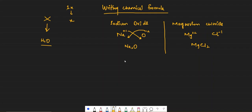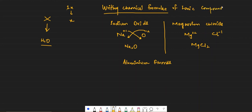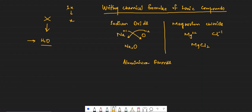Let's do aluminium fluoride. Just remember that here we are writing chemical formulas of ionic compounds — they follow a certain set of rules. Chemical formulas of covalent compounds do not follow any certain rules, so you just remember them over time. For example, water is a covalent compound and you already know its formula is H2O. Currently we are just talking about the chemical formula of ionic compounds.